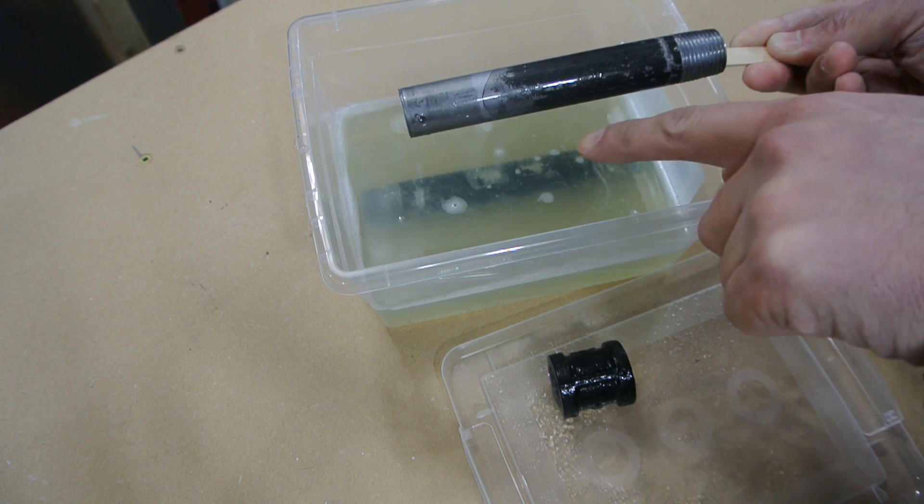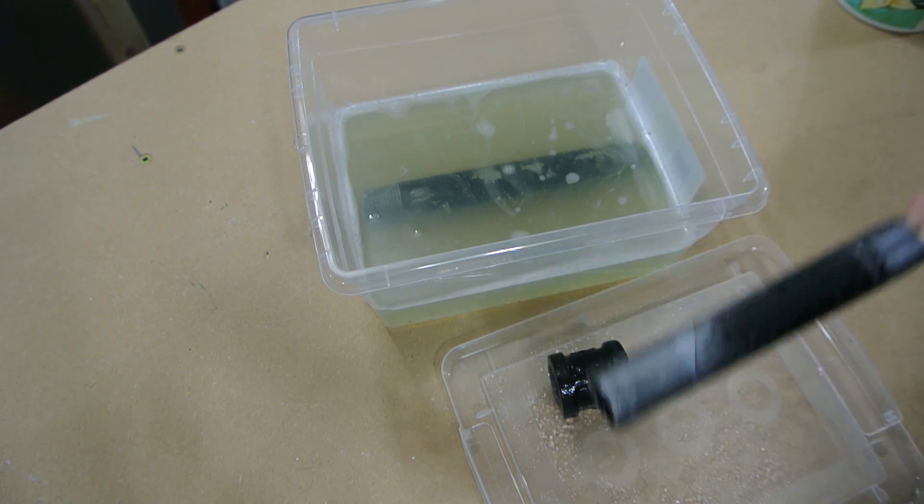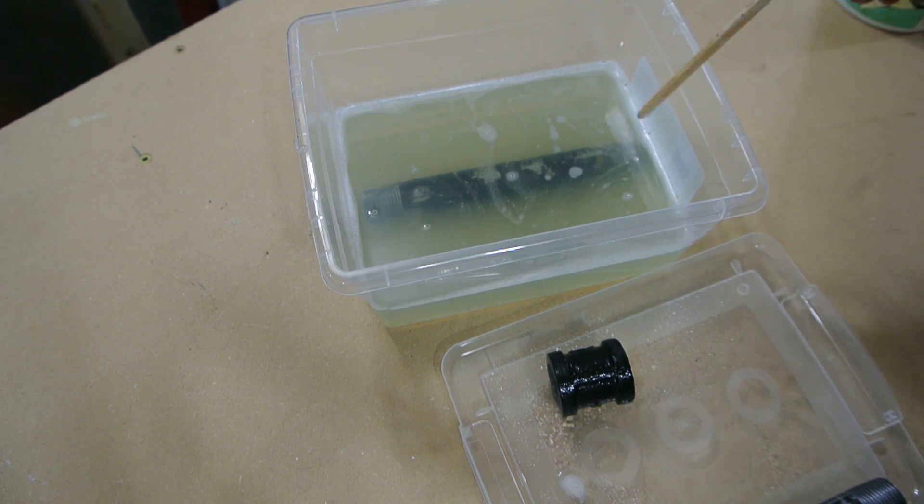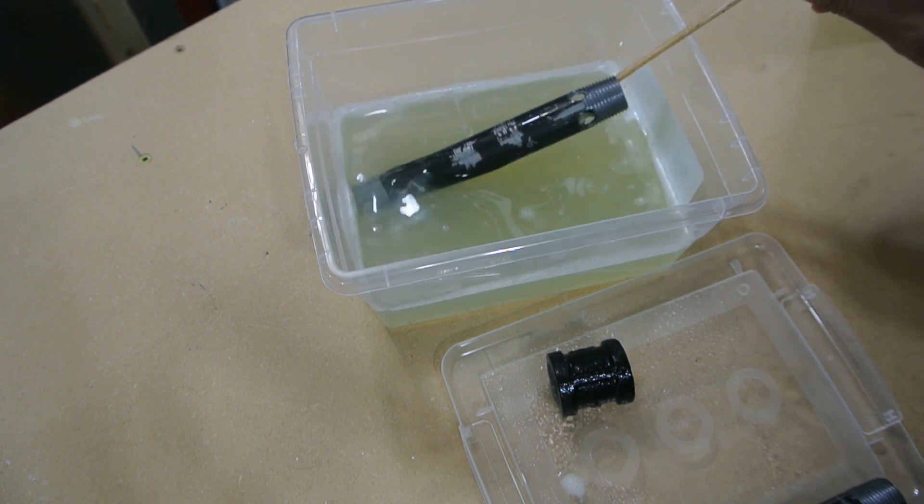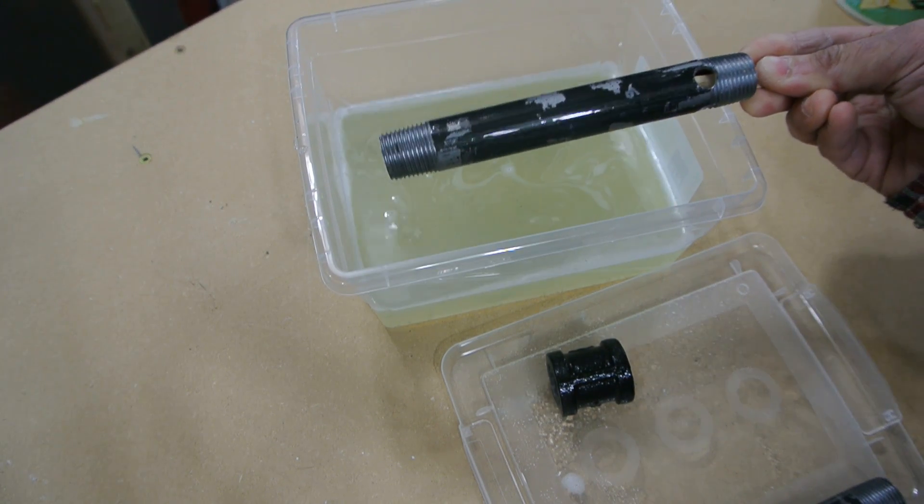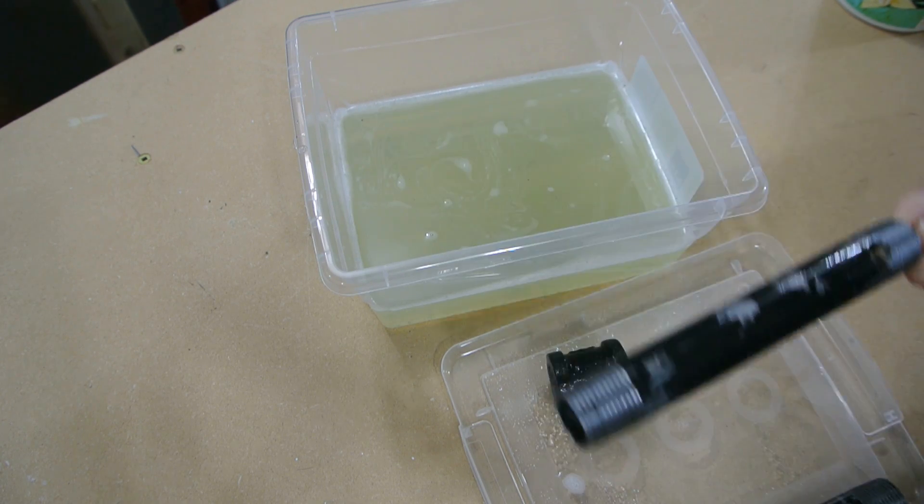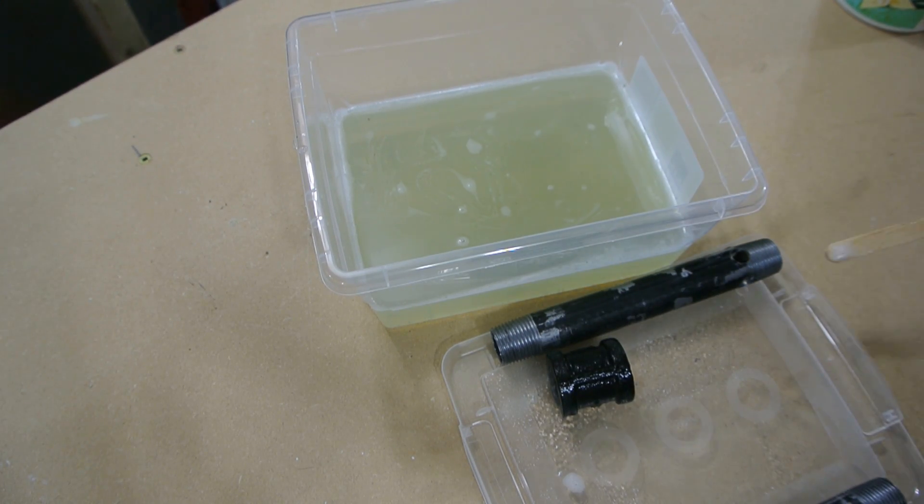I'm just going to take these out and give them a rub and get rid of the excess with maybe some steel wool. I might even give these a coat of paint to keep them from rusting. But that's how you remove galvanization with just good old acetic acid, aka vinegar.